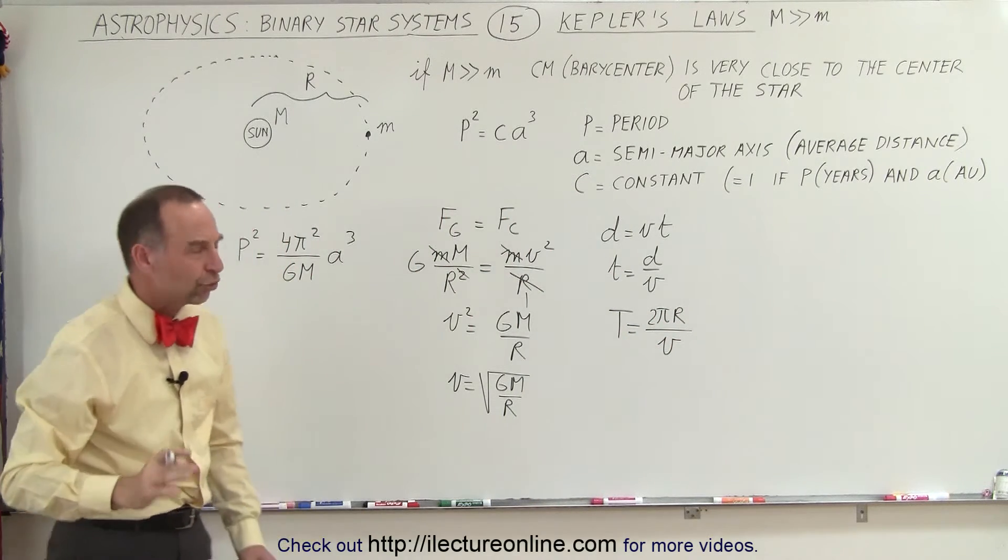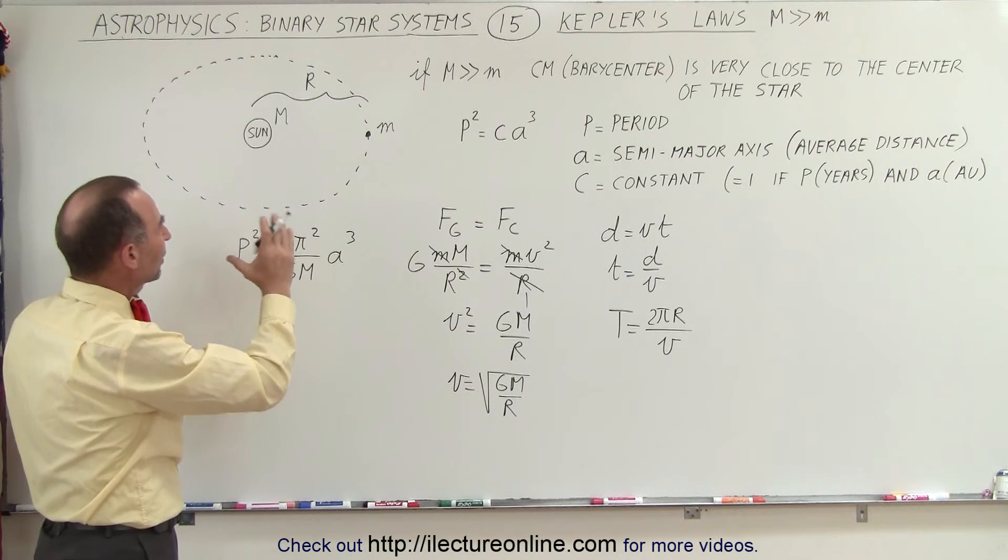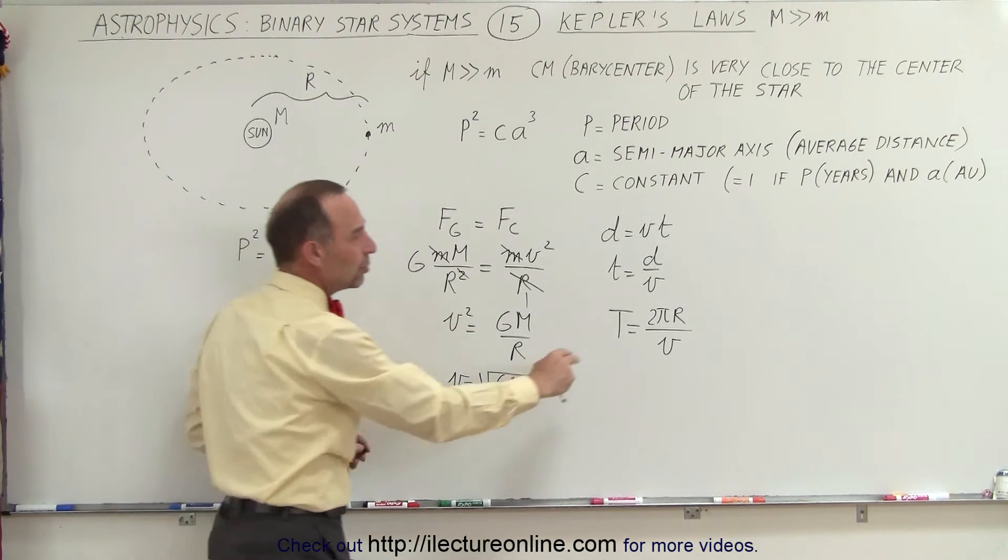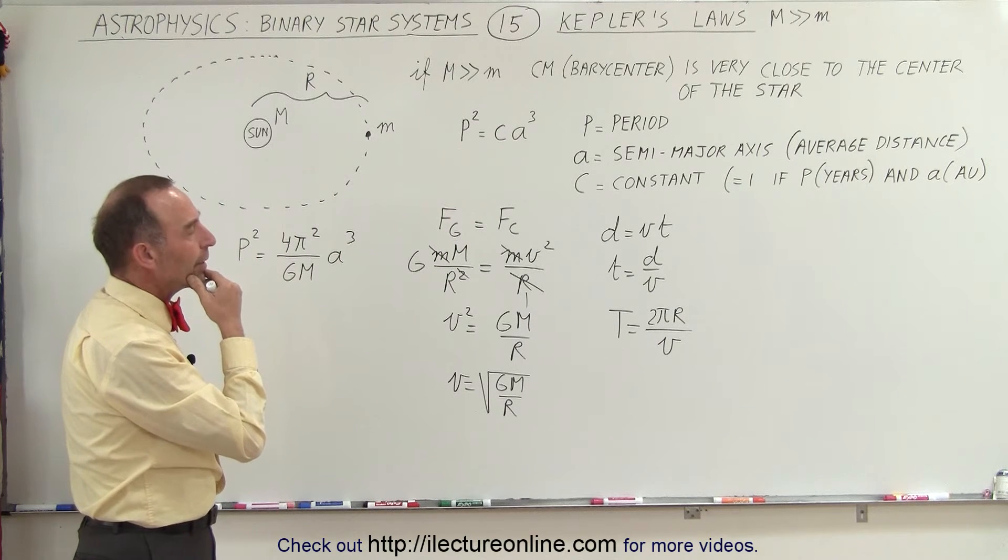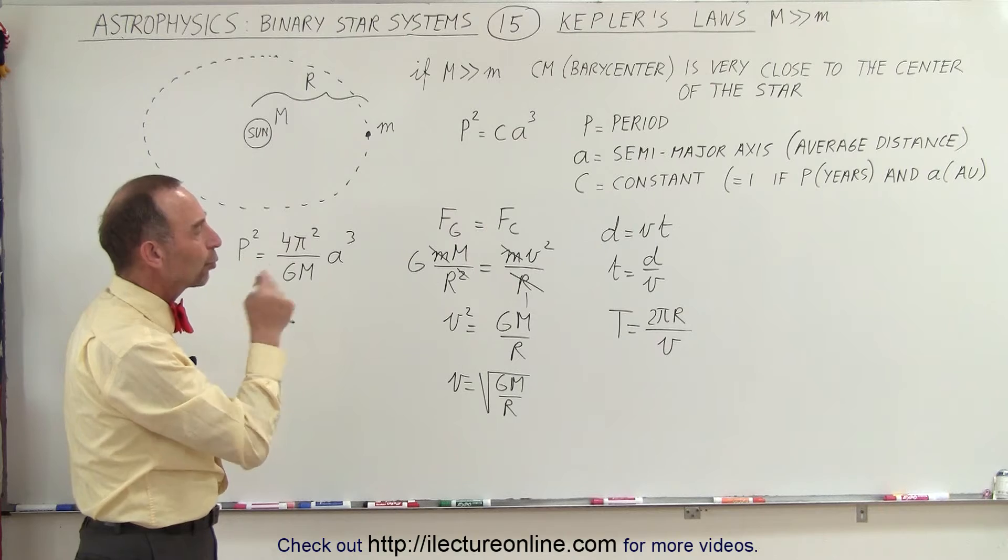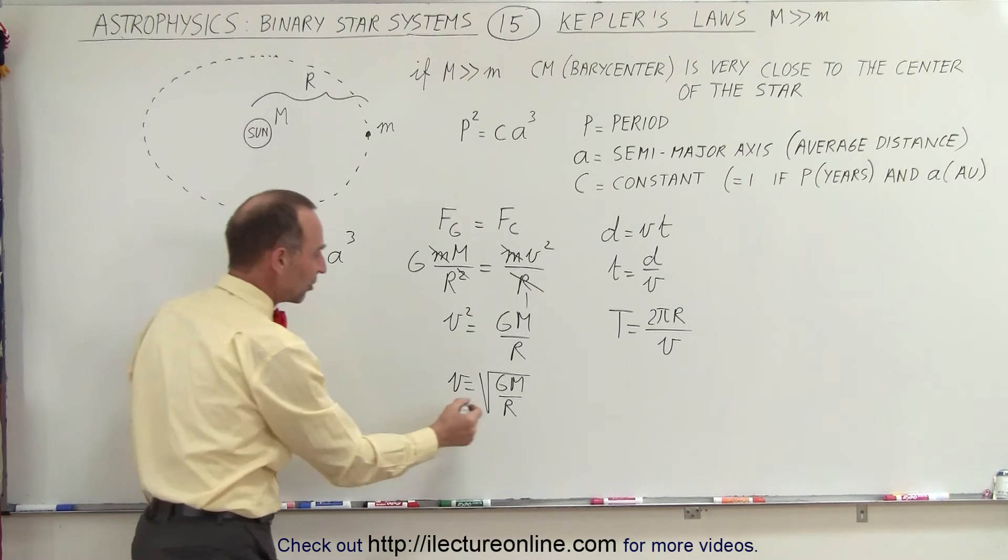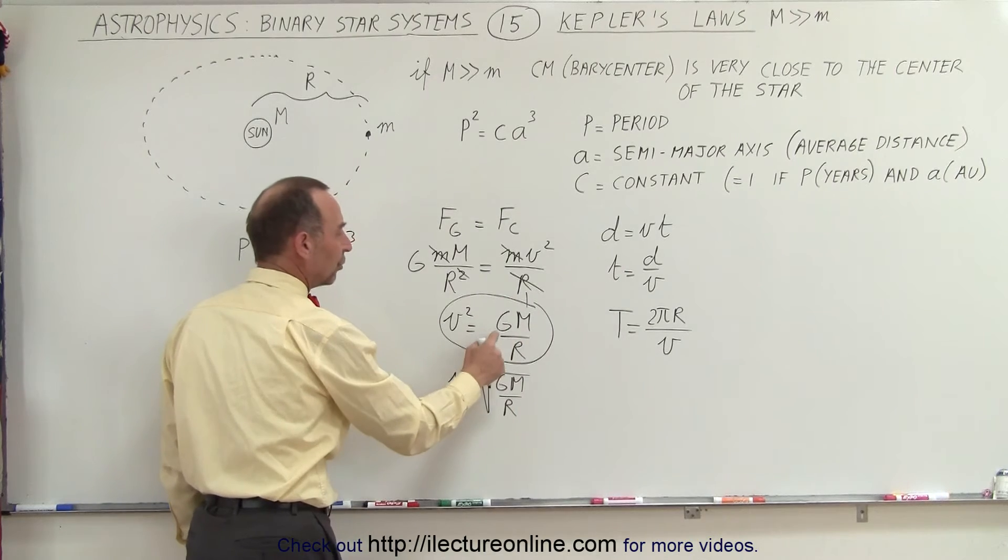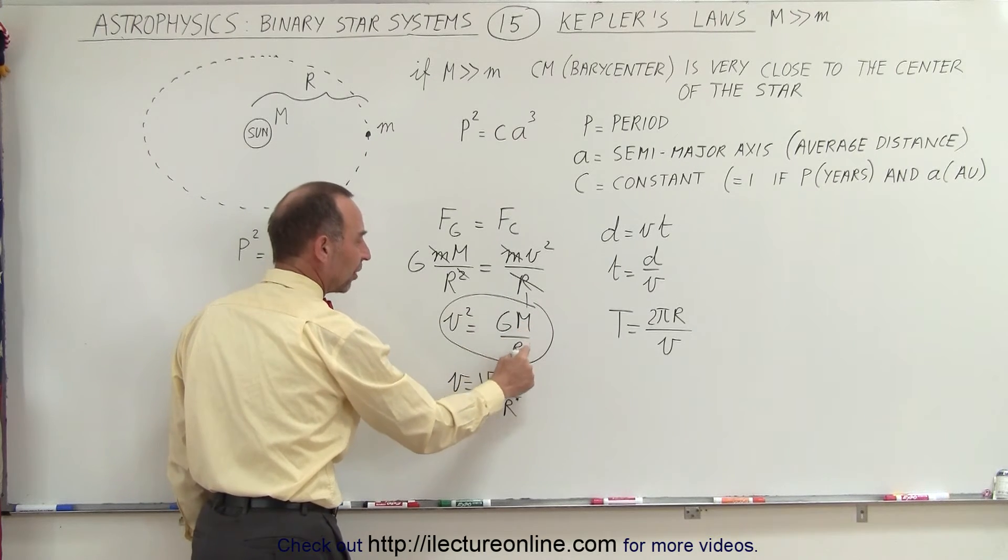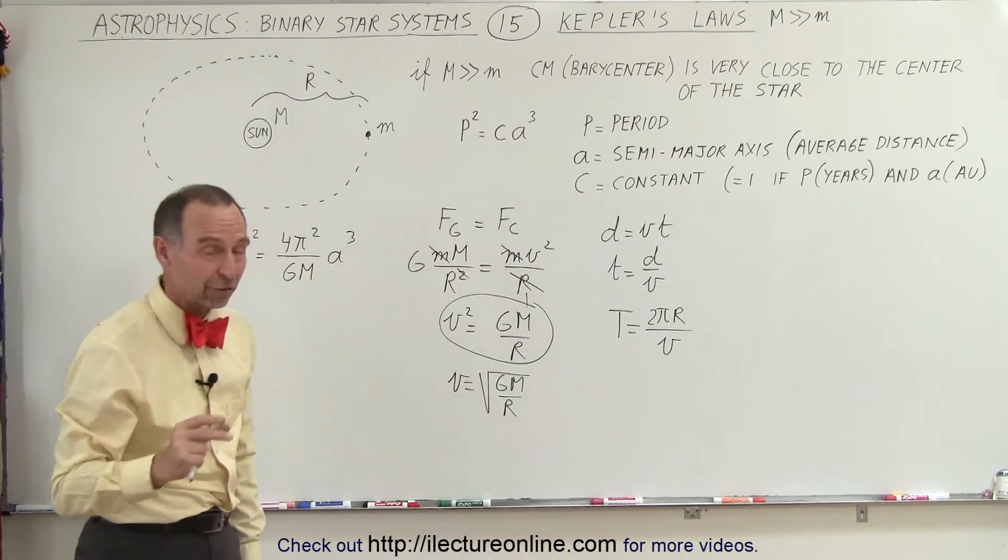Now, we're assuming that the orbit is very nearly circular, and so we can use this as an approximation to that. Now, the period equals 2πr/v. What if we square both sides of the equation? Because we actually have an equation that tells us what v² is in terms of G, the mass of the sun, and the distance. So let's go ahead and do that.